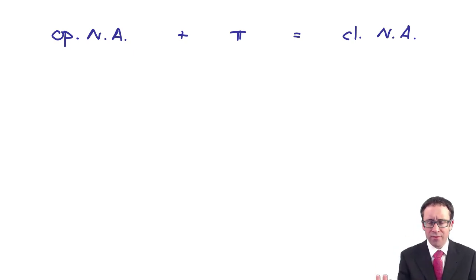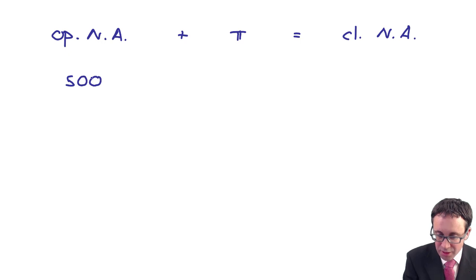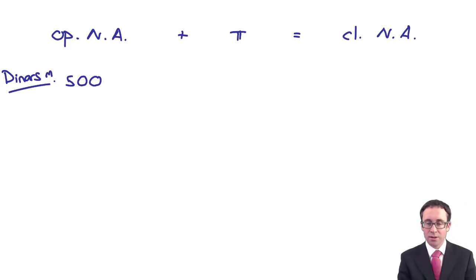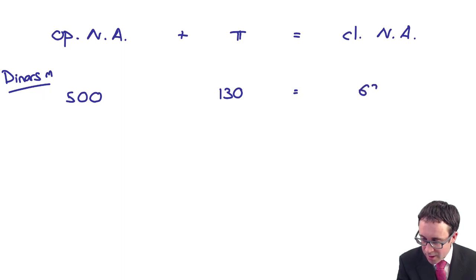If you go back and think about the previous example, I think the opening net assets that we had at the start of the year at the acquisition date were 500. So if we're looking at millions of DNRs, we had 500 from our translation schedule working. The profit was 130. And that gave me 630, which is our closing net assets.